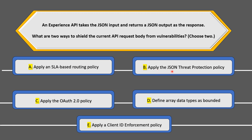Option B is apply the JSON threat protection policy. This definitely seems to be a good candidate for the answer, because the JSON threat protection policy helps you specify parameters that protect your API endpoint from receiving erroneous JSON bodies, which can make your API malfunction.